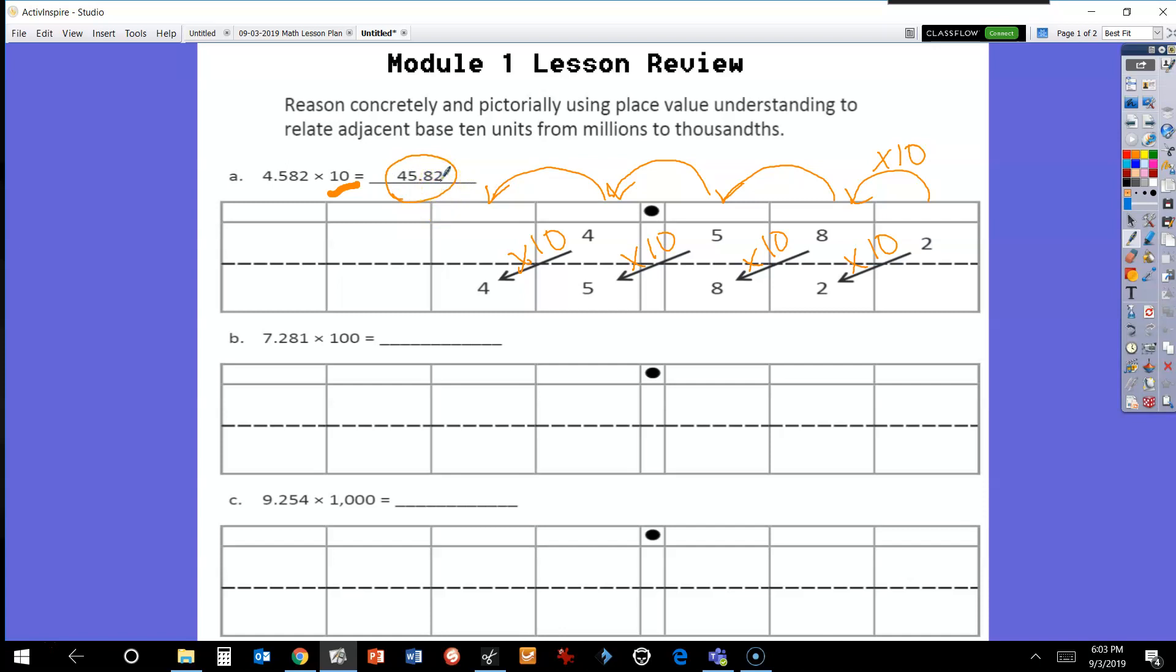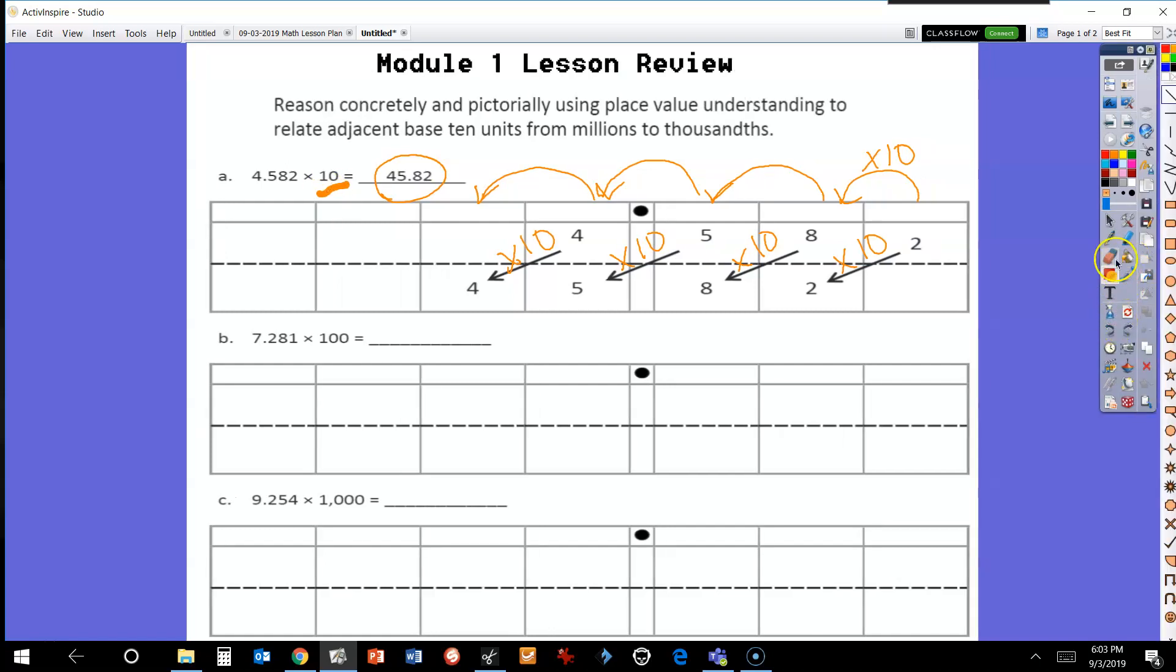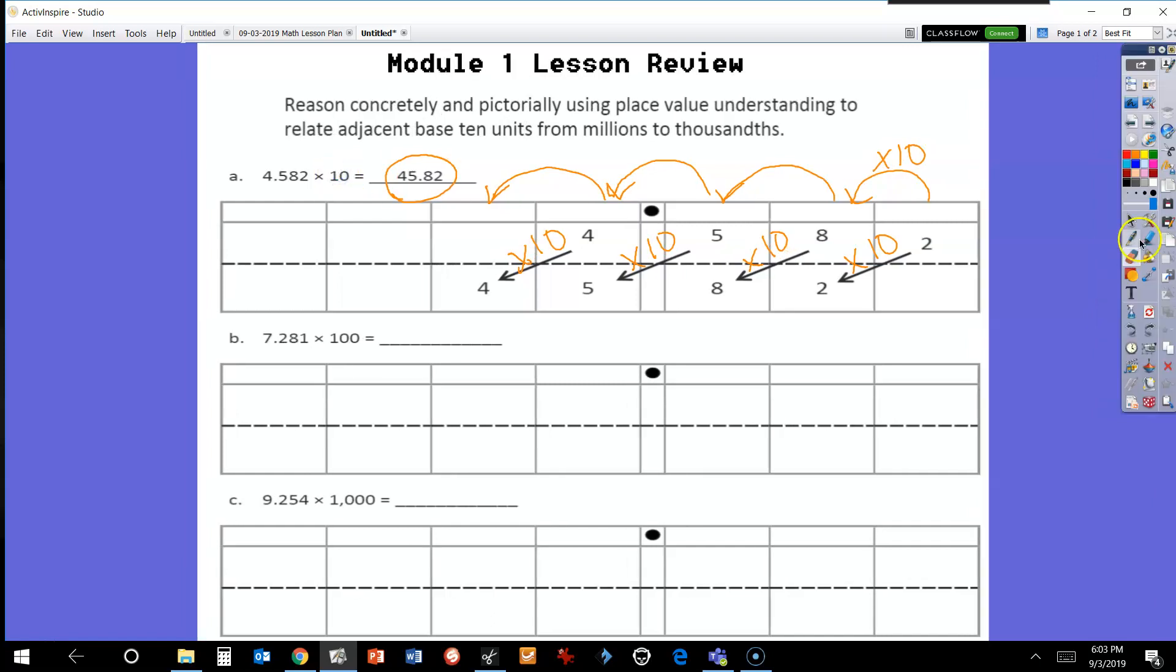This gives us our answer of 45.82 hundredths. A quick check: I know there's one zero in that 10, so this number is going to get bigger. My decimal is going to appear to move from between the 4 and the 5 to between the 5 and the 8, giving us our answer.